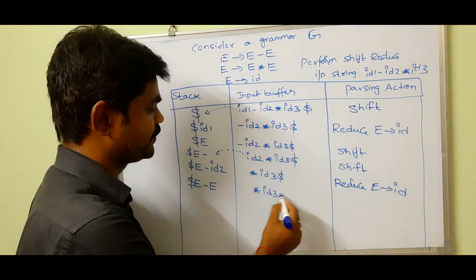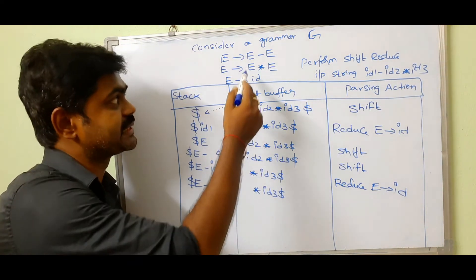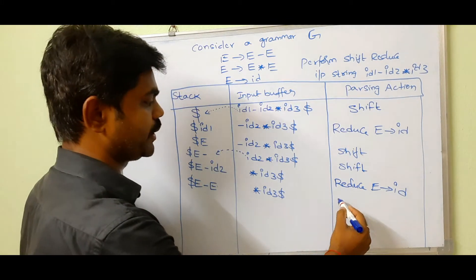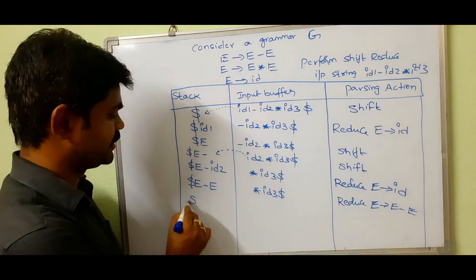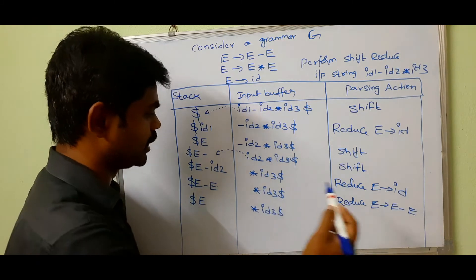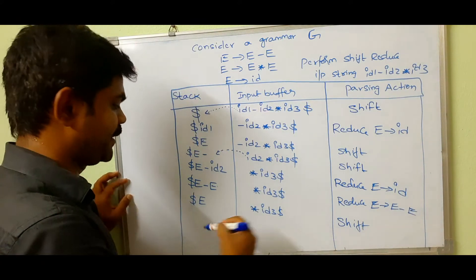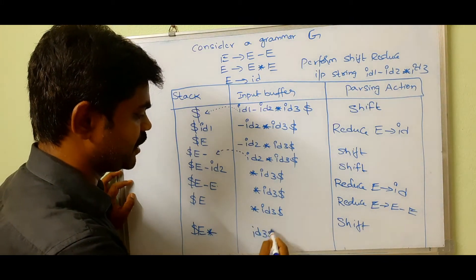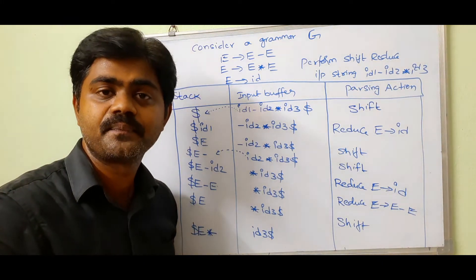Now we have $ E - E on the stack. We have the production E → E - E, so we reduce: stack becomes $ E, input buffer is * id3 $. Next we perform shift: stack becomes $ E *, input buffer is id3 $.